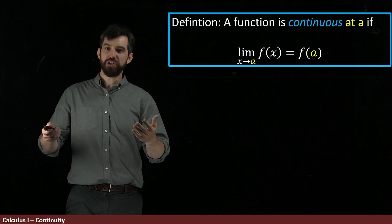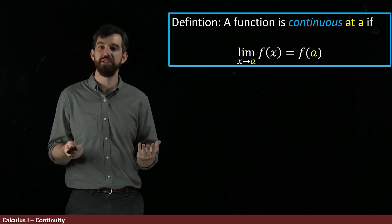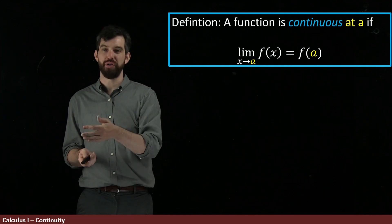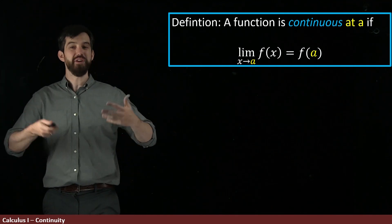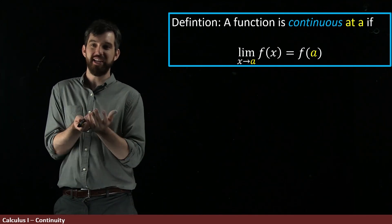So some functions are continuous for all points, other functions are continuous for some points but not for others. And in a few very weird examples, you have functions that are not continuous anywhere.